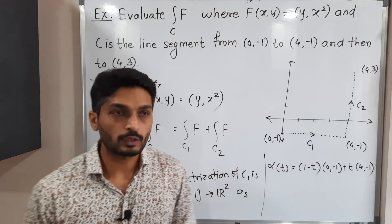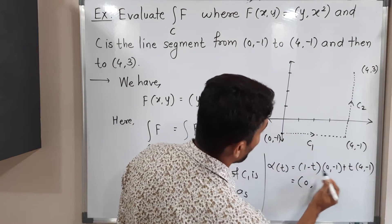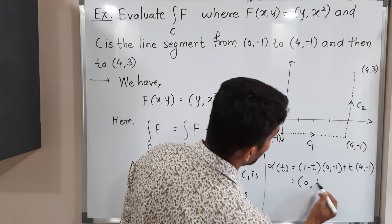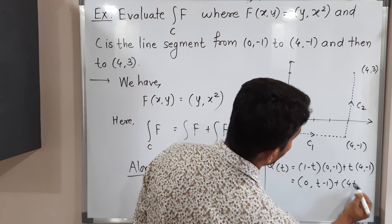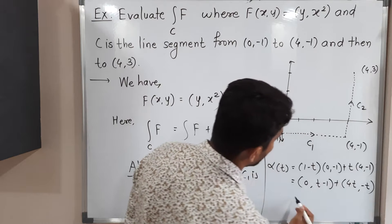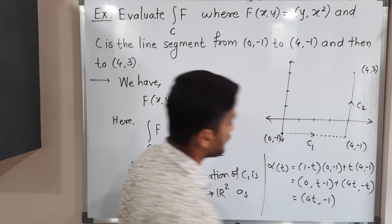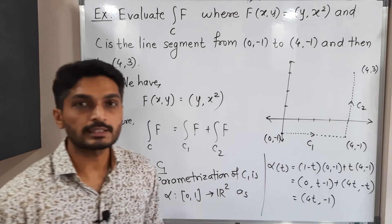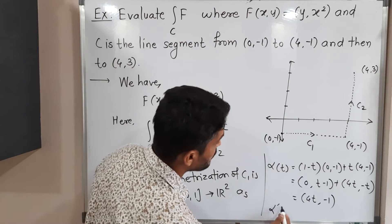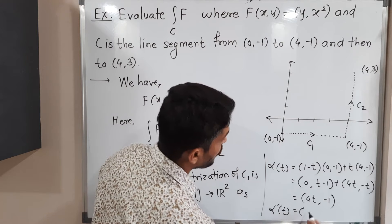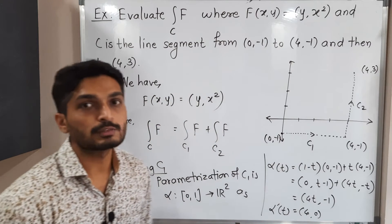Substituting starting point (0, -1) and ending point (4, -1): (1 - t) times (0, -1) plus t times (4, -1). Simplifying: the x-component gives 4t, and the y-component gives (t - 1) + (-t) = -1. So alpha(t) = (4t, -1). The derivative alpha'(t) = (4, 0), since -1 is a constant.